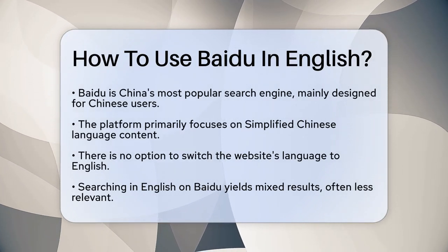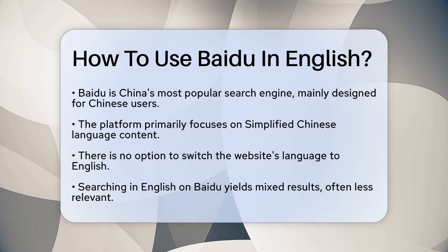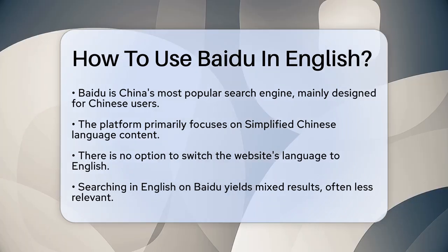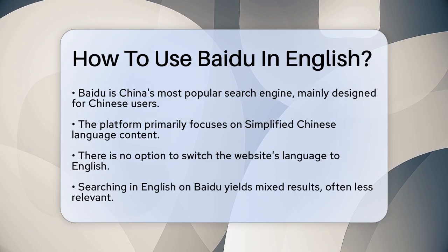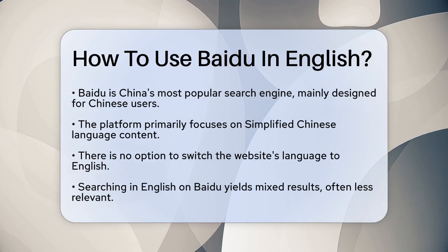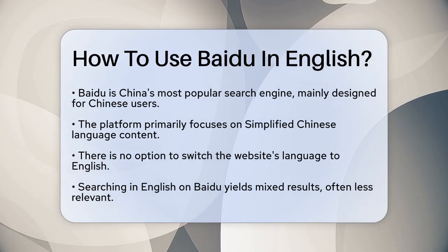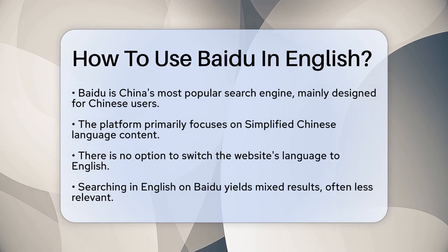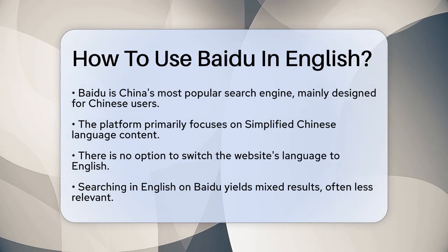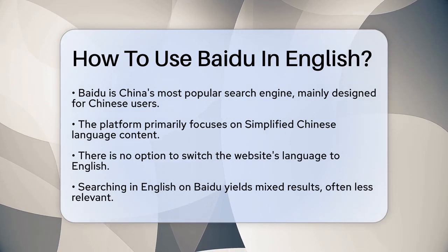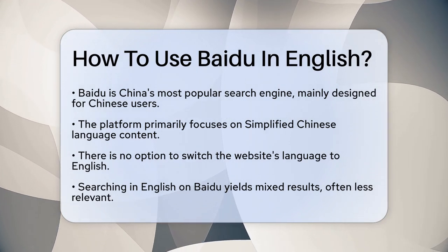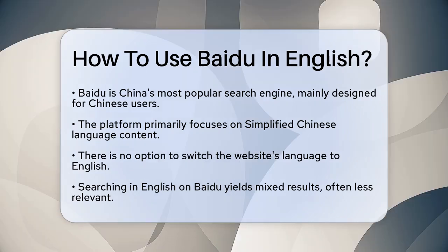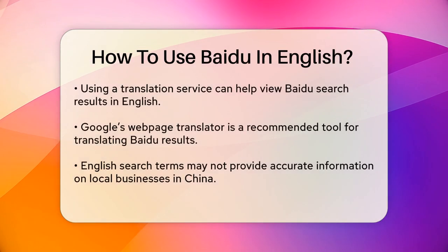First, it's important to know that Baidu is primarily designed for Chinese users, and its main focus is on simplified Chinese. However, when you visit Baidu's website, you'll notice that everything is in Chinese. There's no option to change the language to English directly on the site.